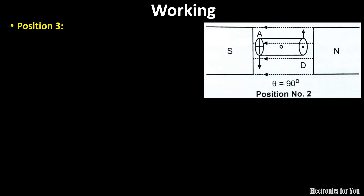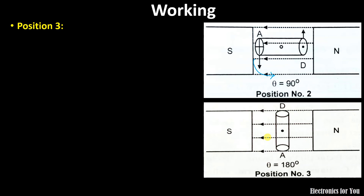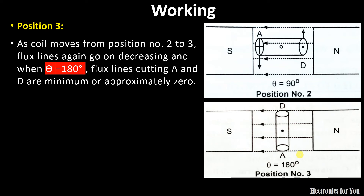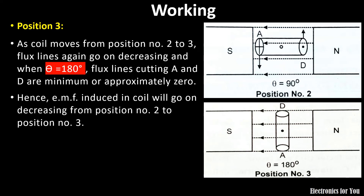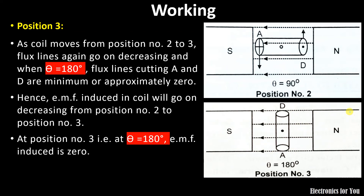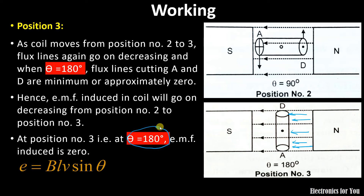Moving to position 3, the coil has rotated 180° from position 1. Previously A was on one side and B on the other, but now they have swapped. The magnetic lines of force and the conductors are again parallel to each other, so θ = 180°. Since sin 180° = 0, the EMF induced is again zero. So the voltage decreases from maximum back to zero.